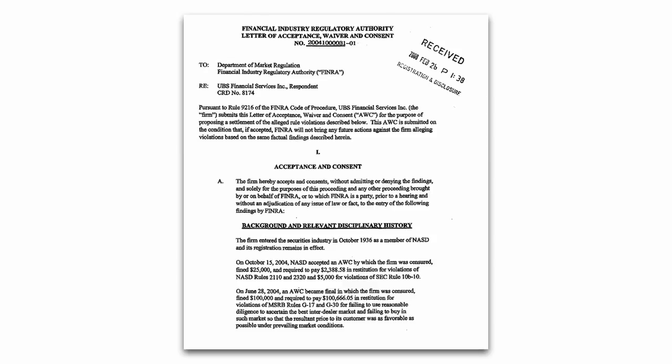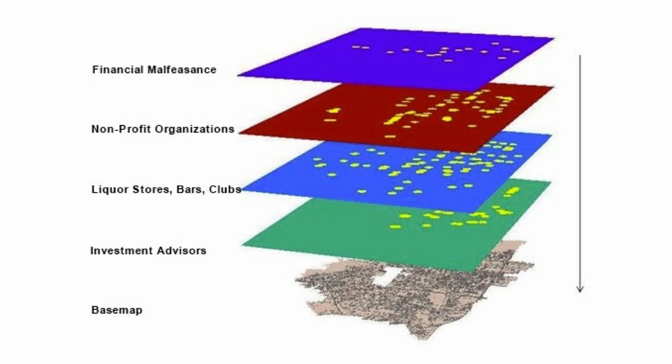FINRA is a non-governmental organization responsible for regulating the financial industry. To get our data, we parsed a bunch of PDFs looking for instances where FINRA had fined organizations for financial malfeasance. Then we used a machine learning approach, common in predictive policing, called risk-terrain modeling.